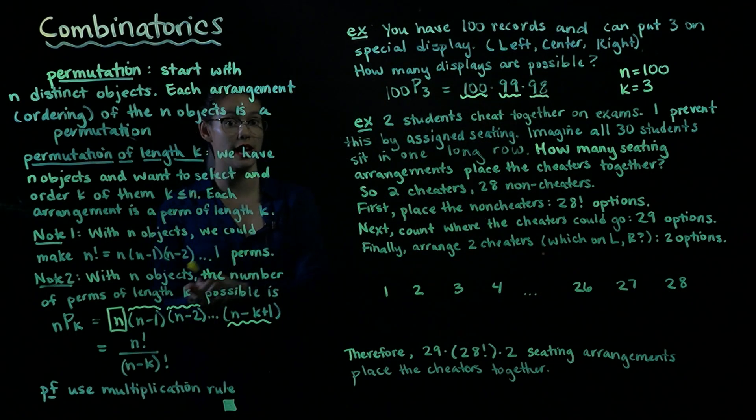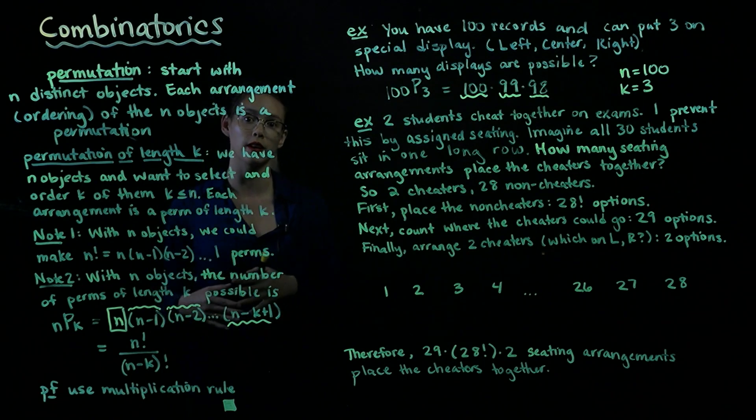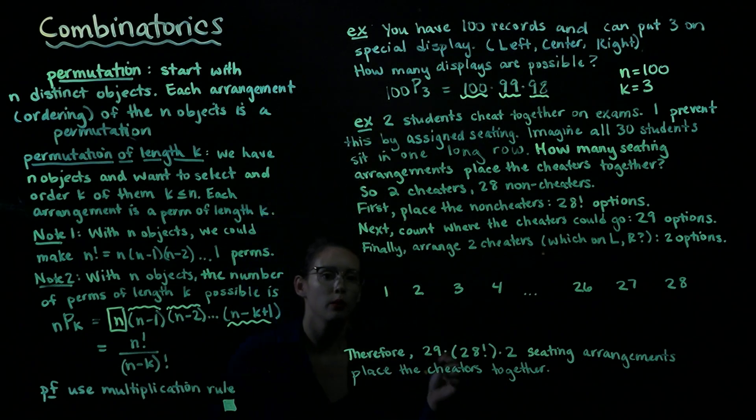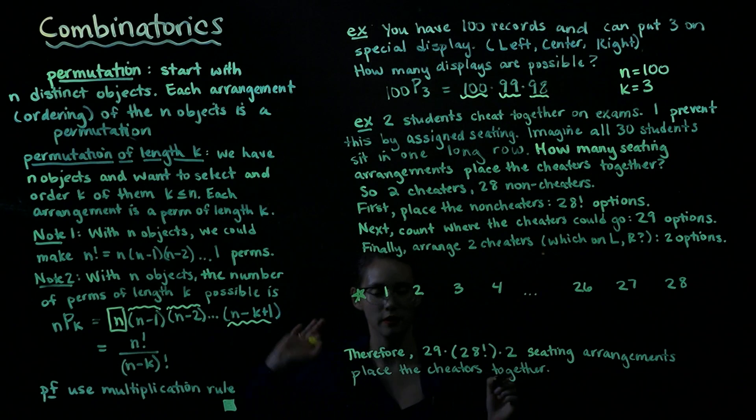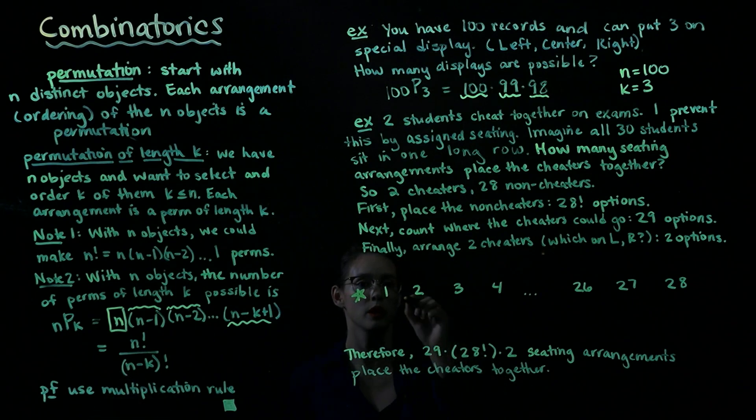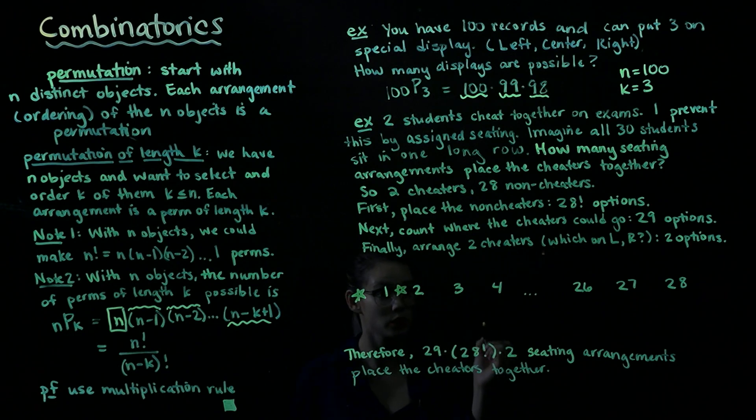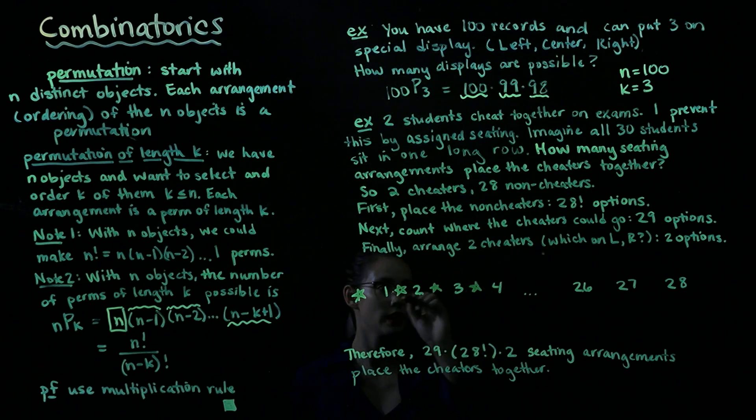So now we have placed the non-cheaters and we can go and figure out how many places could we put the cheaters. We could put the cheaters on the very left side of the classroom. We could put the cheaters between the leftmost student and the second-to-leftmost student. We could put them between the second student and the third student. We could put them between the third student and the fourth student, and so on.